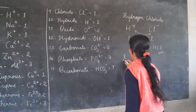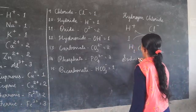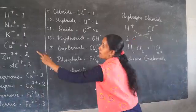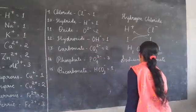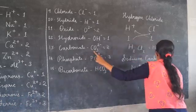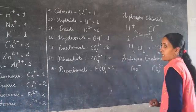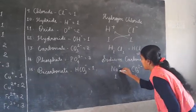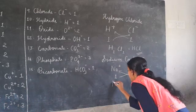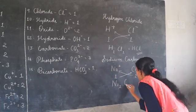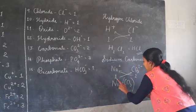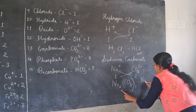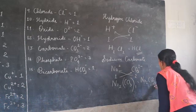Next example: sodium carbonate. Sodium ion is Na plus. Carbonate is CO3 2 minus. The valency of sodium is 1 and the valency of carbonate is 2. Interchanging the valencies gives Na2 CO3 with valency 1. Since valency 1 does not need to be written, the formula of the compound is Na2CO3 — sodium carbonate.